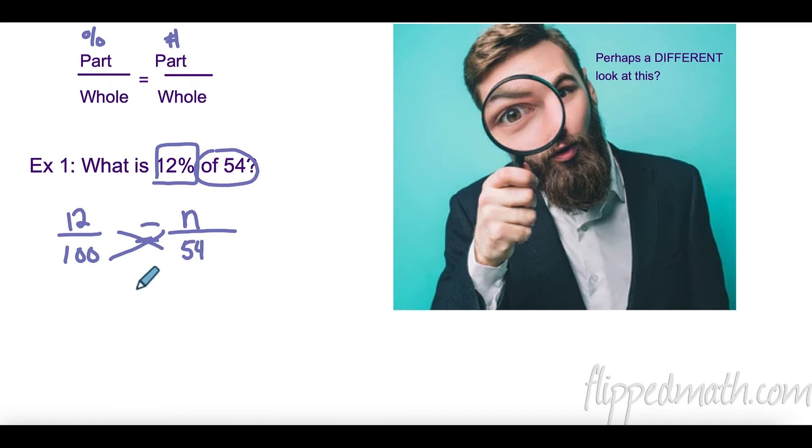I'm going to cross multiply: 100n equals 12 times 54, which is 648. Then divide by 100, and we find that n is 6.48. One thing I want to tell you - as a general rule for this unit, let's round to two decimal places, to the hundredths.